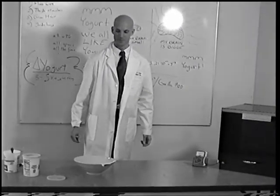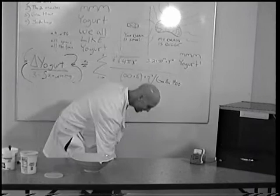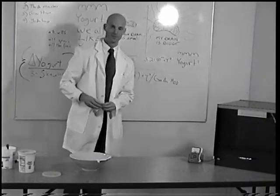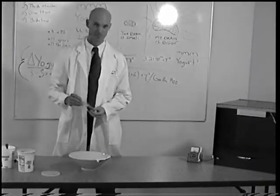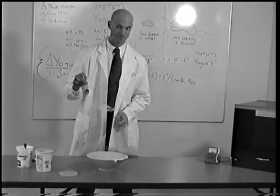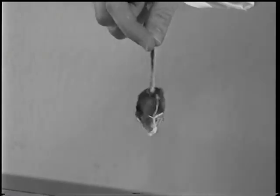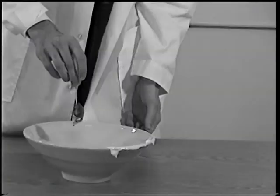In our first experiment, we will feed the exposed half of the yogurt and watch for a response from the other half. Here, we have the yogurt's natural prey, a common household mouse.